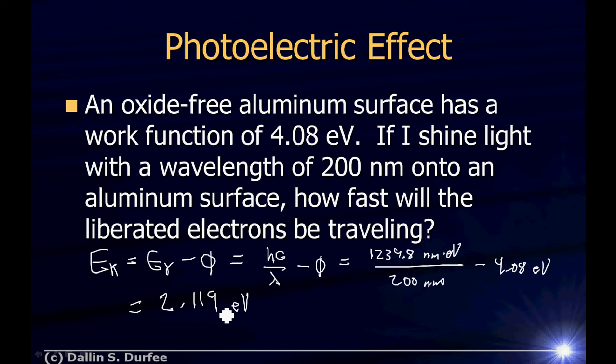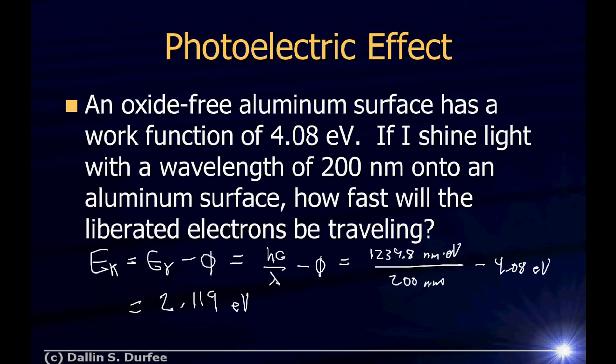Now, I just need to figure out how fast the electrons are moving. Is this going to be relativistic or not? Do I have to use relativistic kinetic energy? Well, one way to know how relativistic something is, is to compare the rest energy to its kinetic energy. If the rest energy is huge compared to the kinetic energy, then you can ignore relativity. Electrons have a rest energy of about half a million electron volts. So, 2 electron volts is pretty small compared to that, so let's just go ahead and use classical physics, which says the kinetic energy is one-half mv squared.